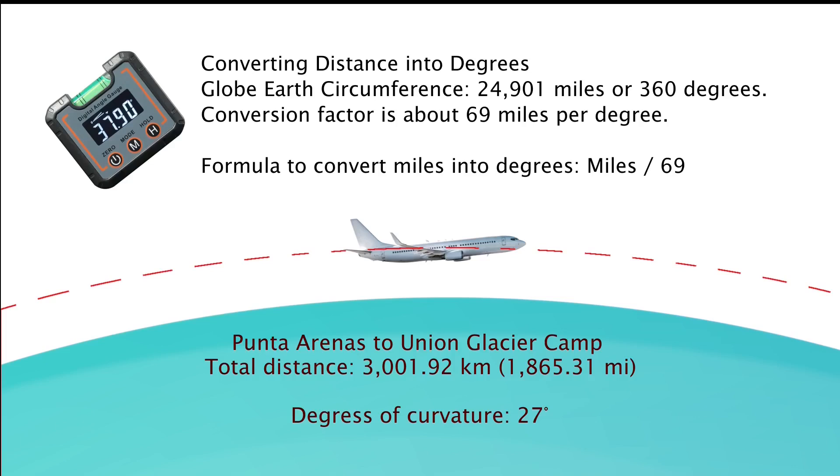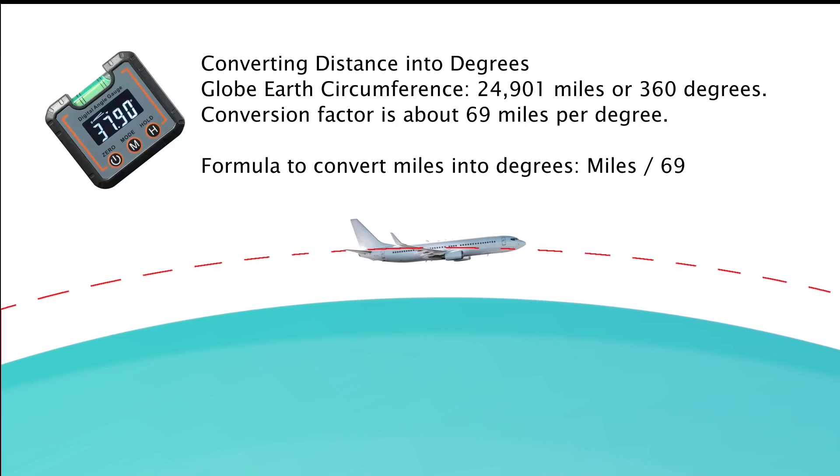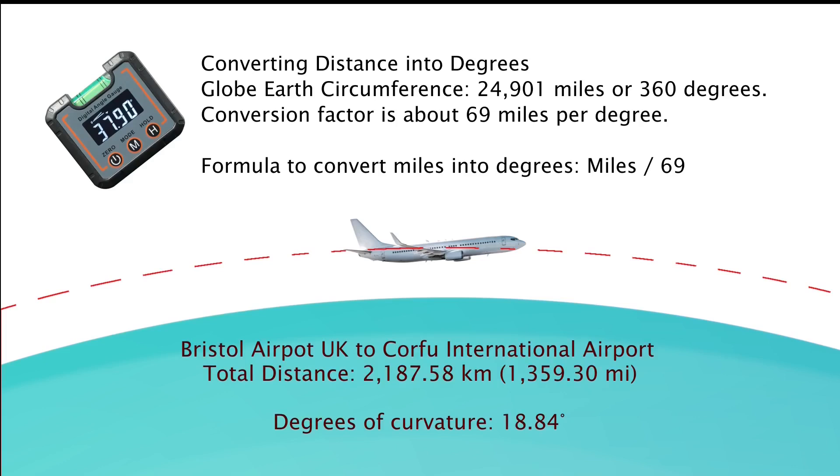Now you could do this anywhere if you like, any flight. A lot of us are flying about here and there from time to time. You could take one of these things in your pocket and just try it for yourself anywhere in the world. We should be able to measure curvature wherever we go. So let's take Bristol Airport, for example, in the UK, heading to Corfu International Airport. And that is a total distance of 1,359 miles. And that would give you 18.84 degrees of curvature. So that's quite a short flight, but you would still see a considerable amount of curvature.